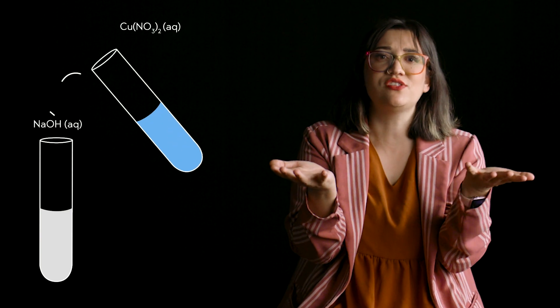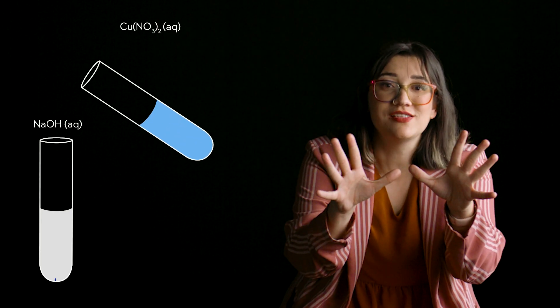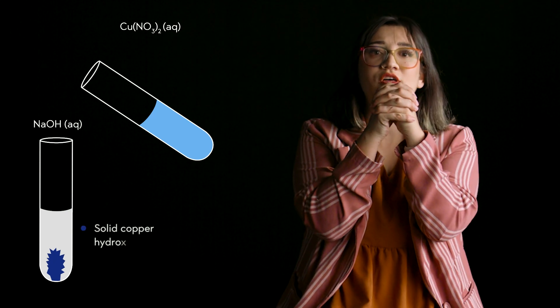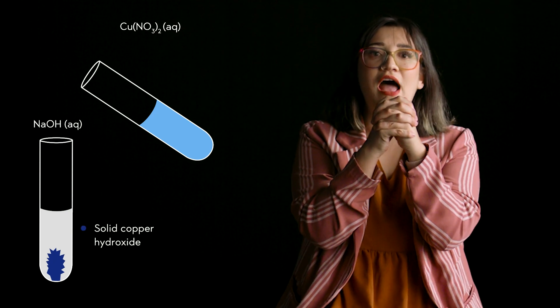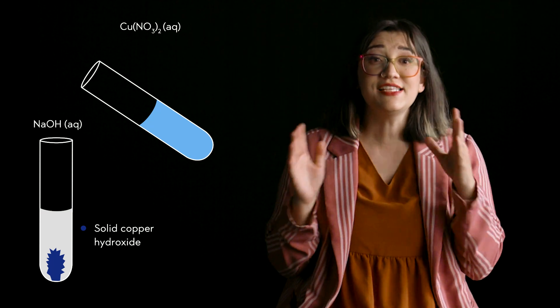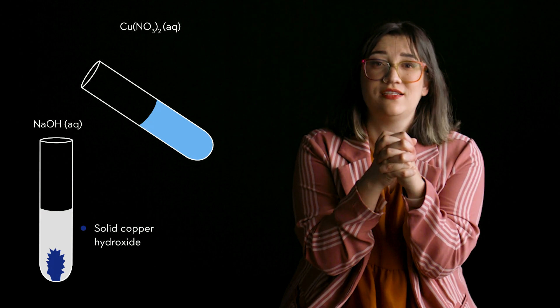When these two solutions are mixed, magic happens. When copper ions meet hydroxide ions, they form a solid called copper hydroxide, which is insoluble in water. This solid clumps together and settles out as a precipitant. So when these solutions mix, they create a visible solid, showing us a classic example of a precipitation reaction.